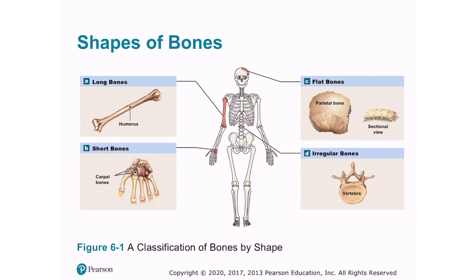Examples of long bones are the limbs, such as the humerus of the arm and the femur of the thigh. Examples of short bones include the carpal bones of the wrist and the tarsal bones of the ankles. Examples of flat bones include the parietal bones of the skull, the ribs or costals, and the shoulder blades, the scapulae. Examples of irregular bones include the vertebrae of the spinal column and several bones of the skull.